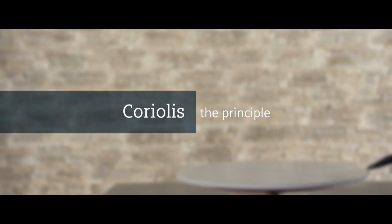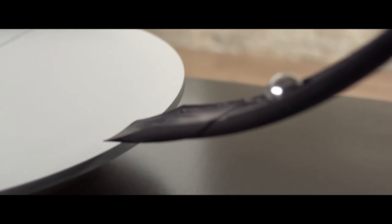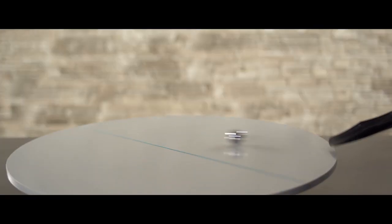With the Coriolis effect, a physical force is explained. It acts on a medium that is accelerated in a rotating system, like a ball on a rotating disc. Its movement is straight, however, if the observer turns with the disc, the ball is apparently deflected.